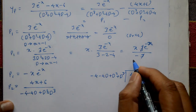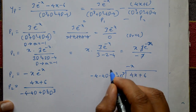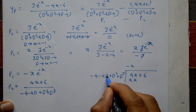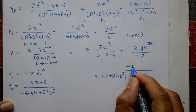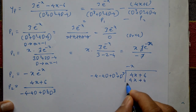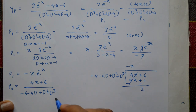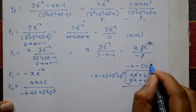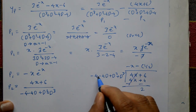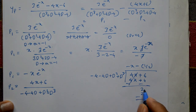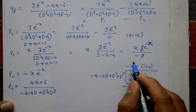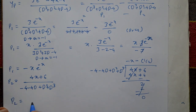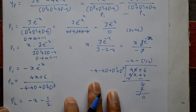Performing the long division on (4x + 6) divided by (-4 - 4D + D² + D³): the quotient gives -x - 1/2 after performing the division steps. The remainder becomes 0, so P2 = -x - 1/2.